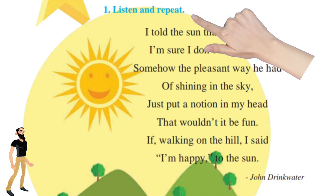Listen and repeat. Suno aur dohrao. I told the sun that I was glad. I am sure I don't know why. Somehow the pleasant way he had of shining in the sky. Just put a notion in my head that wouldn't it be fun if walking on the hill I said I am happy to the sun.